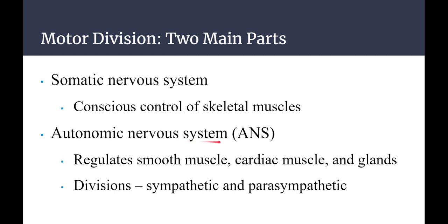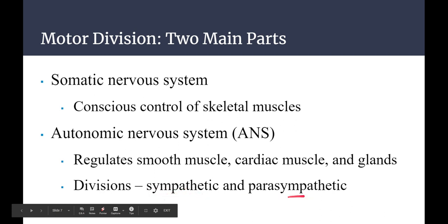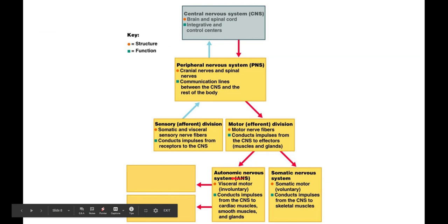Then you have the autonomic nervous system. Auto means self — think automobile, a self-mobile vehicle. The autonomic nervous system, sometimes abbreviated ANS, regulates your smooth muscle, cardiac muscle, and glands — all the muscles you don't have direct control over. The autonomic nervous system is divided into the sympathetic and parasympathetic systems. You can see the motor division divides into the autonomic and somatic nervous systems, and then the autonomic divides further into the sympathetic and parasympathetic divisions.